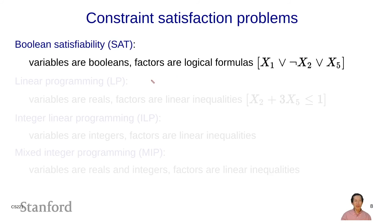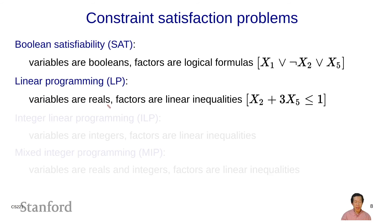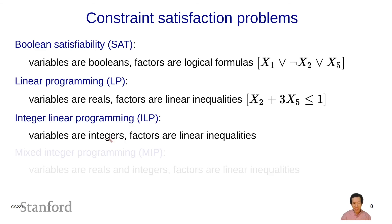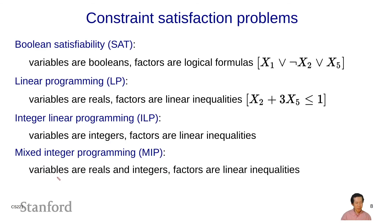Another important class is linear programming, where variables are real-valued numbers and factors are linear inequalities such as x2 + x3 ≤ x5 < 1. Despite variables taking on infinitely many values, linear programs have special structure that makes them efficient to solve. Integer linear programs are the same but with integer-valued variables, making them very hard again — like SAT. Mixed integer linear programs have both real and integer variables, and are also hard to solve.